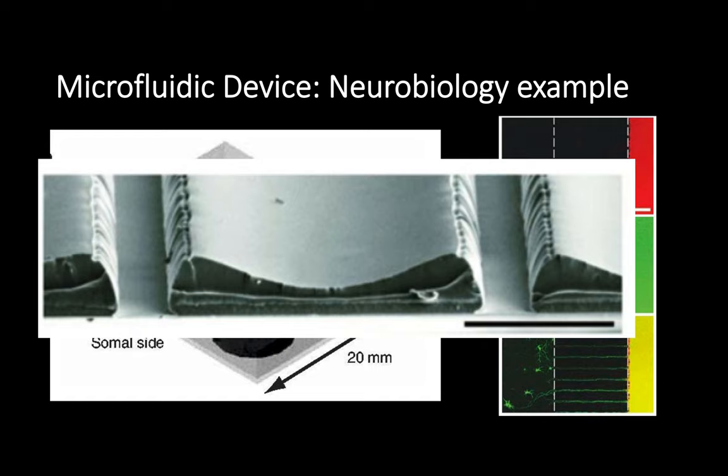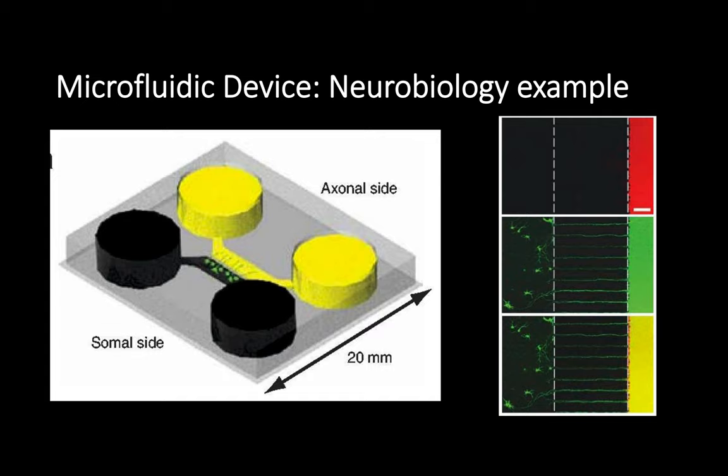In here, you see a schematic of a culture chamber with the important microfluidic features in the center component that connects the yellow and black sides. This setup was made from a mold with micrometer-sized channels, with the end product being made out of silicone and coated with something biological to help cell adhesion and survival.